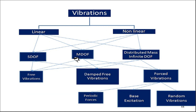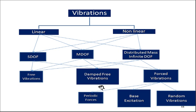In summary, vibration is divided into linear and nonlinear categories. Under linear vibration there are single degree of freedom, multi-degree of freedom, and distributed mass or infinite degree of freedom systems. Under each of these, there are free vibrations, damped free vibrations, and forced vibrations. Forced vibrations are further classified as periodic forces, base excitation, and rotor vibrations.